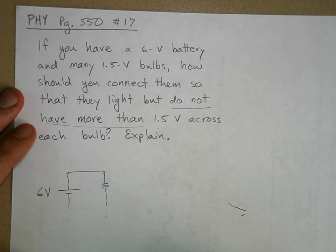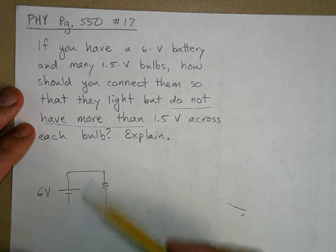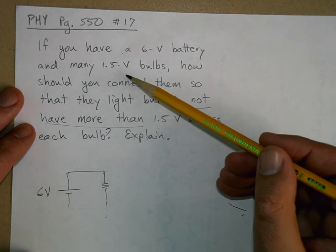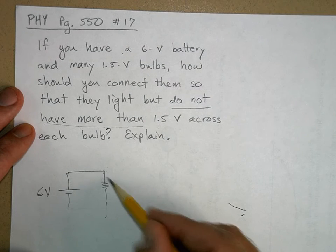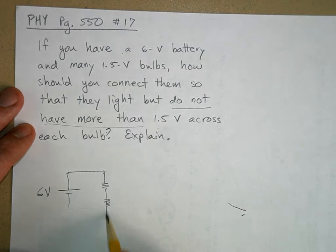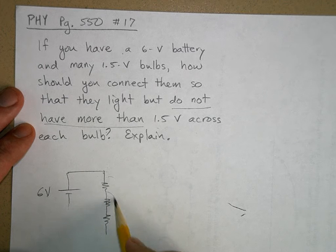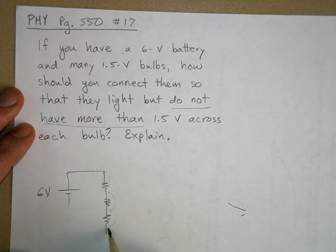What I want is a 1.5-volt drop or less. So if I put a 1.5 and then I put another one, and then I put another one, 1.5, 1.5, 1.5, 1.5. Well, now I'm down to 6.